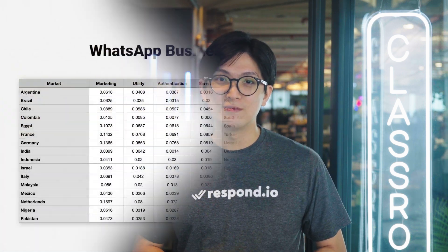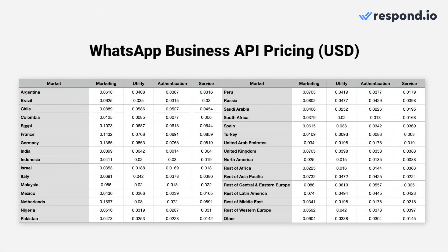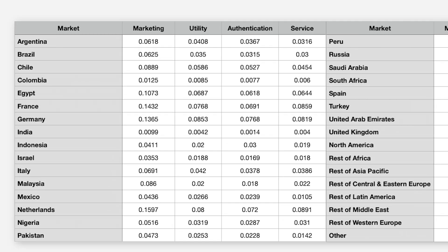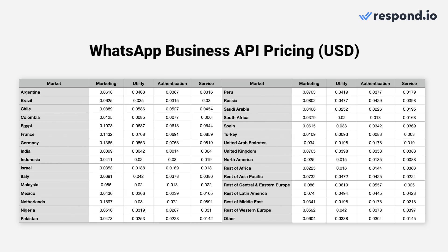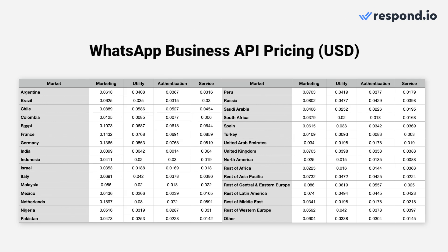Besides charges based on WhatsApp conversation categories, the pricing also depends on the customer's country code. For example, if your customer's country code is Mexico, the rates can be found in the Mexico section. You can pause the video to check on other countries, or click on the link to find out more detail on pricing for other currencies.